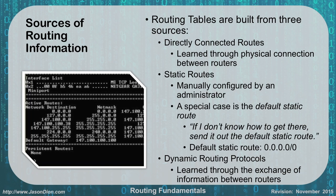The last way we have routing information is through dynamic routing protocols. There are lots of different protocols where routers can talk to each other and exchange routing information. Things like OSPF — Open Shortest Path First — or BGP — Border Gateway Protocol — are examples of routing protocols. We'll learn a lot more about these later.